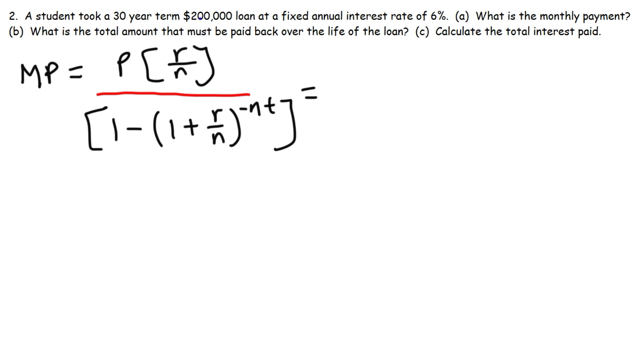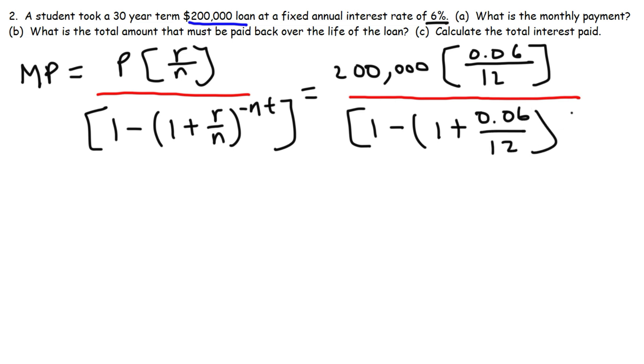So in this example, the principal is the balance of the loan, which is $200,000. The annual interest rate this time is a little bit higher. It's 6%. So 6 divided by 100, that's 0.06. N, since we're calculating the monthly payment, N is going to be 12. That's not going to change in this example. In fact, since most loans are repaid on a monthly basis, N is going to be 12 for this formula. It usually doesn't change.